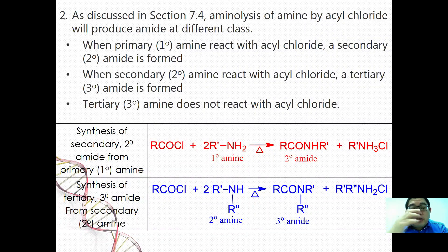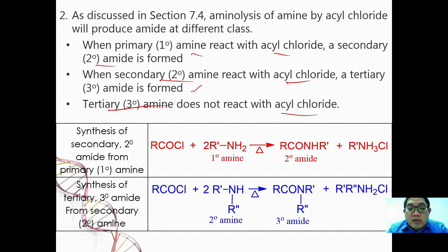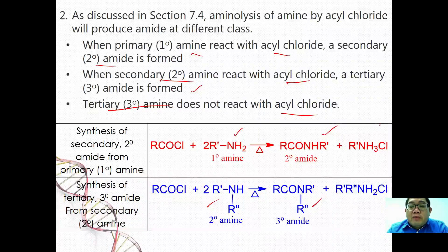The second reaction we are going to look at is the aminolysis of amine using acyl chloride. When a primary amine reacts with acyl chloride, you form a secondary amide. When a secondary amine reacts with acyl chloride, you form a tertiary amide. Tertiary amine does not react with acyl chloride. In summary: RCOCl + RNH2 gives a secondary amide; RCOCl + R2NH gives a tertiary amide. The side product formed is an ammonium salt, because the HCl produced is acidic and further reacts with the amine.